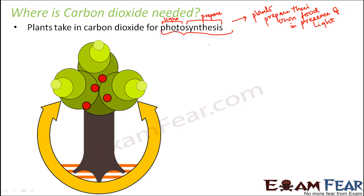In the process of photosynthesis, plants take in carbon dioxide from the atmosphere. Without carbon dioxide, they cannot do photosynthesis, and if plants can't do photosynthesis they won't get food — and animals will also not get food, because all other animals are dependent on plants, either directly or indirectly. Plants take in carbon dioxide, undergo photosynthesis, prepare their own food, and survive.